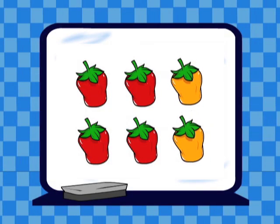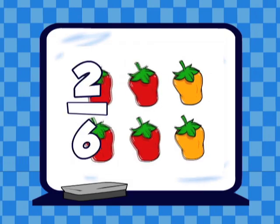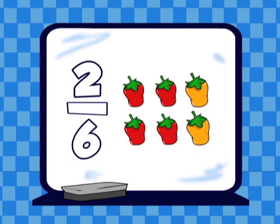Two peppers are yellow. There are six peppers in all. Two-six of the peppers are yellow.